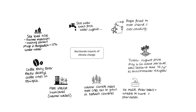Tuvalu is another example — the highest point is only four and a half metres above sea level. New Zealand has said they will take 75 Tuvaluans every year as environmental refugees. You can also talk about more intense hurricanes as ocean waters get warmer, impacting places like the Philippines and Florida. There's also the coffee berry borer beetle in Ethiopia destroying coffee crops — if farmers don't have crops to sell, they don't make as much money, their quality of life goes down, and they can't send their kids to school.